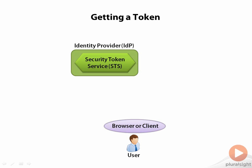To make sure this is clear, let's walk through how a user gets a token. The process begins when a user at a browser or client requests the token from some STS. That STS is provided by an identity provider, commonly called just an IDP. Once it receives the request, the STS must authenticate the user — that is, it must make the user prove it is who it really claims to be.